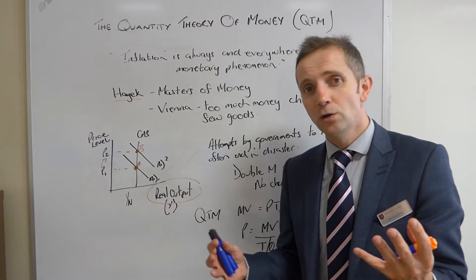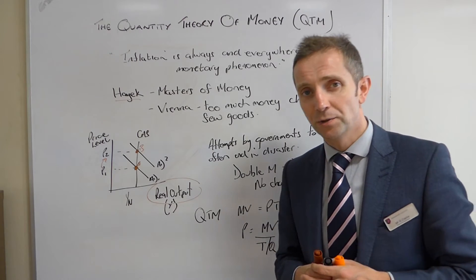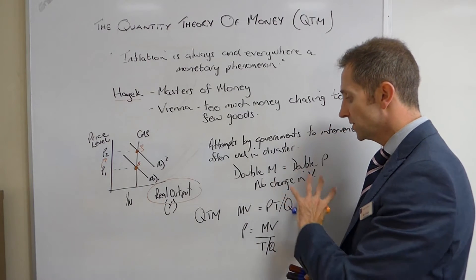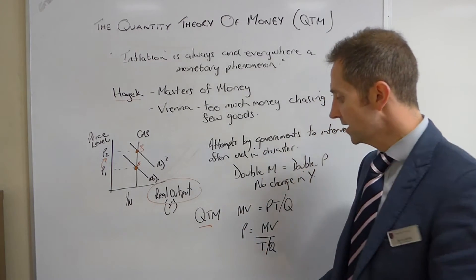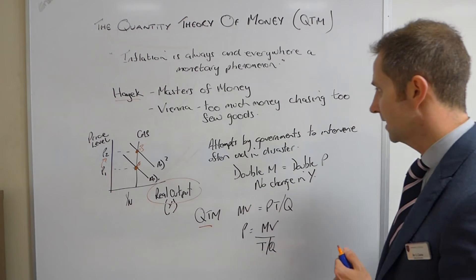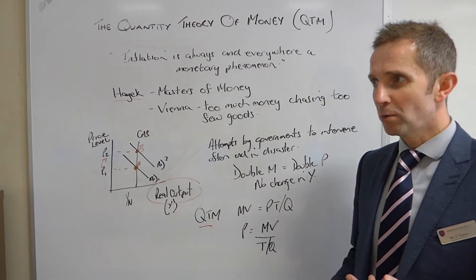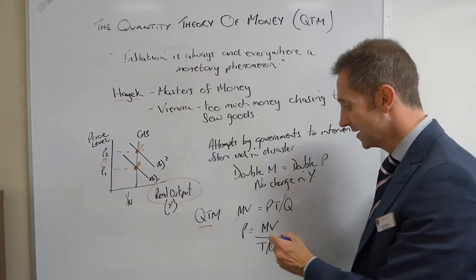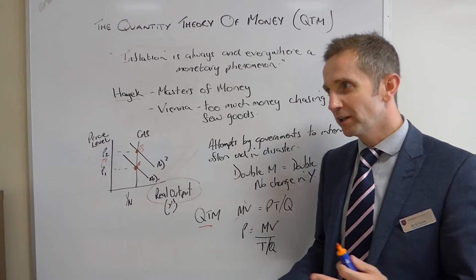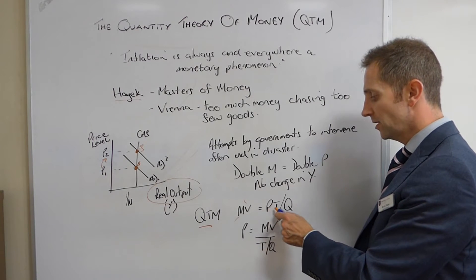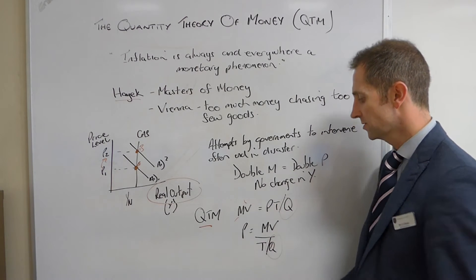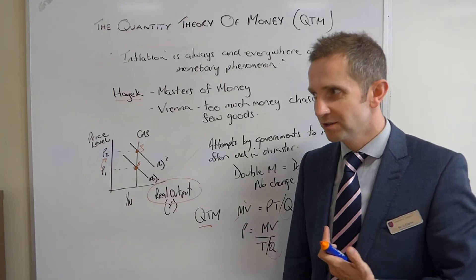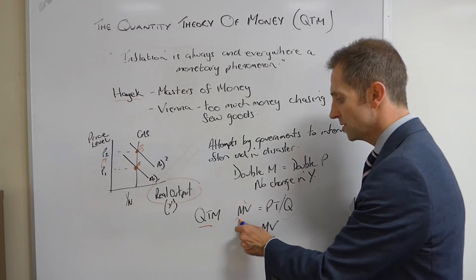Try to stimulate AD, all that will happen is you get inflation. Now, we can formalize this more appropriately by using this Quantity Theory of Money equation, QTM, where MV is equal to PT. You'll probably have come across this before, MV equals PT, where M is the money supply, V is the velocity of circulation, P is the price level, and T, sometimes in some textbooks it's a Q, just depends which book you're looking at. P is the price level, and T or Q is the number of transactions taking place.